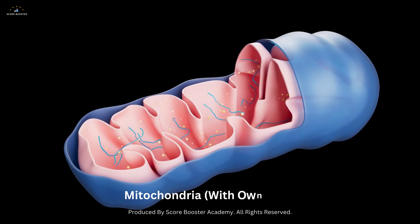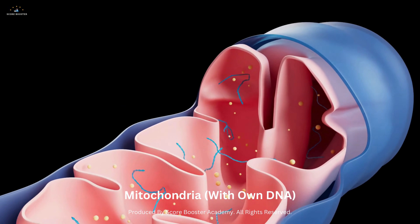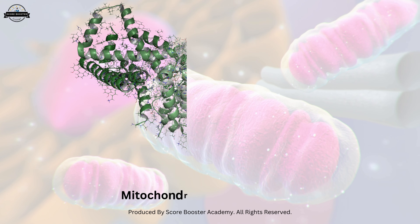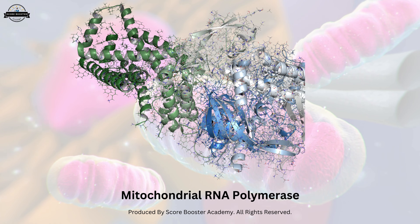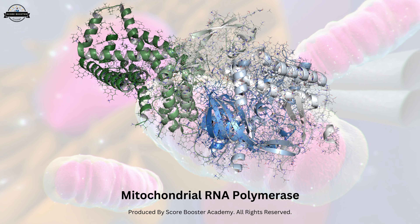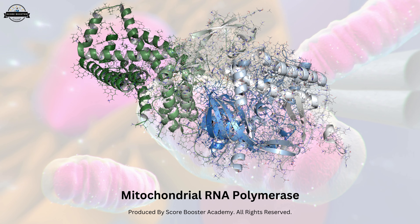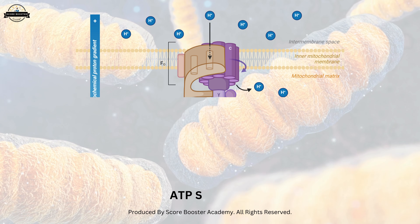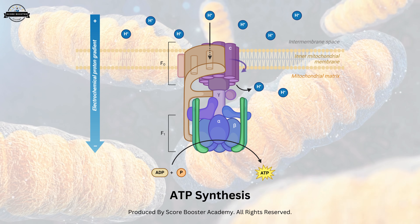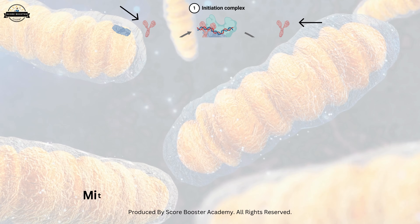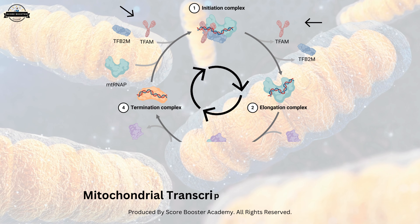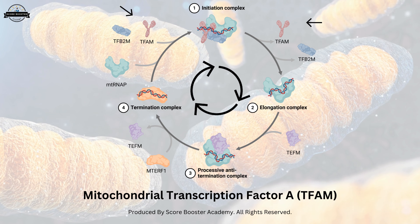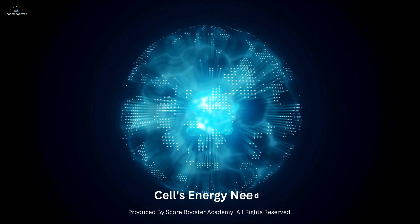Mitochondria, the energy-producing organelles in eukaryotic cells, have their own DNA and transcription machinery. Mitochondrial RNA polymerase, similar to bacterial RNA polymerase, transcribes the mitochondrial genome, which encodes essential components of the electron transport chain and ATP synthesis. Mitochondrial transcription is regulated by mitochondrial transcription factor A and other factors, which ensure the proper expression of mitochondrial genes in response to the cell's energy needs.